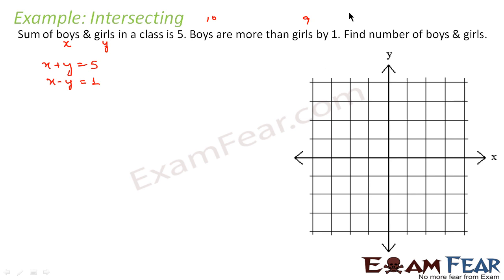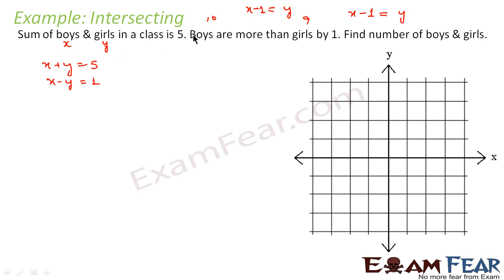Alternatively, since boys equal x and girls equal y, and boys are 1 more than girls, if I subtract 1 from boy the number will equal the number of girls. So I can also say x minus 1 is equal to y, which is the same as x minus y equals 1. Both interpretations are equivalent — interpret it whichever way is easier for you.